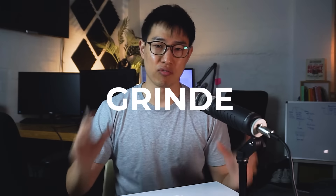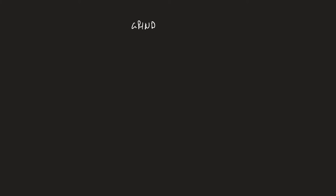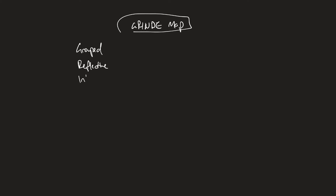So how do we do this epic, amazing mind map? Well, it's actually really quite simple, and I use the mnemonic GRIND. So what I'm going to be teaching you is how to do a GRIND map. GRIND is short for: Grouped, Reflective, Interconnected, Non-verbal, Directional, and Emphasized.